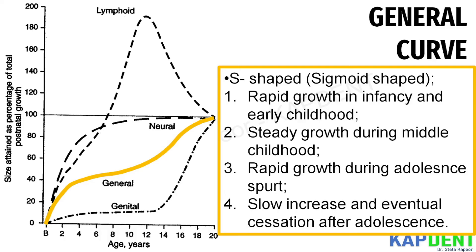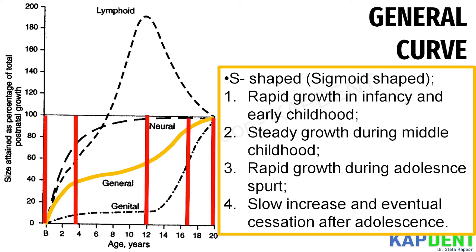The fourth curve is the general curve, which depicts somatic and visceral maturation. It describes the growth of the body as a whole, including changes in stature, weight, and external dimensions, as well as changes in muscle, bone, and other organs including the respiratory system, digestive system, urinary portion of the urogenital system, heart, and blood vessels. This is an S-shaped sigmoid curve with four phases: rapid growth in infancy and early childhood, steady and constant growth during middle childhood, rapid growth during the adolescent spurt, and a slow increase with eventual cessation of growth after adolescence.